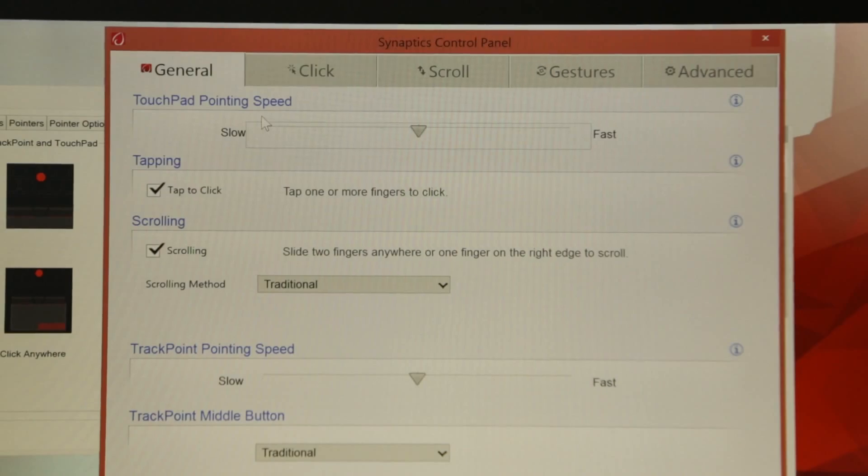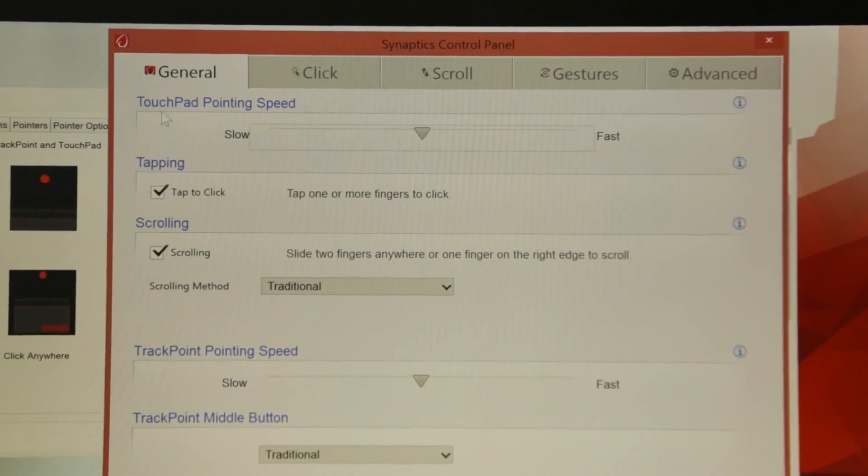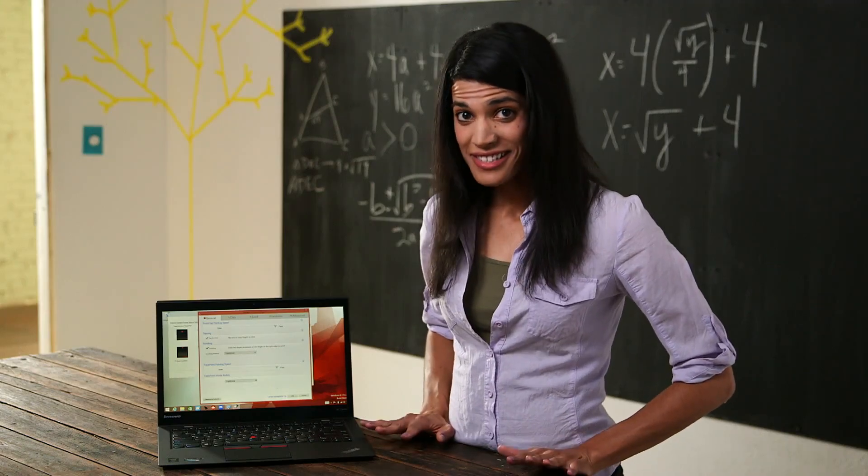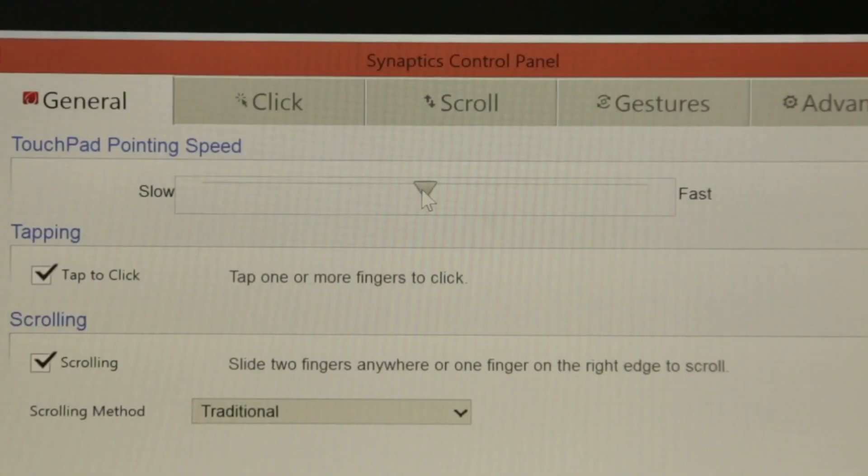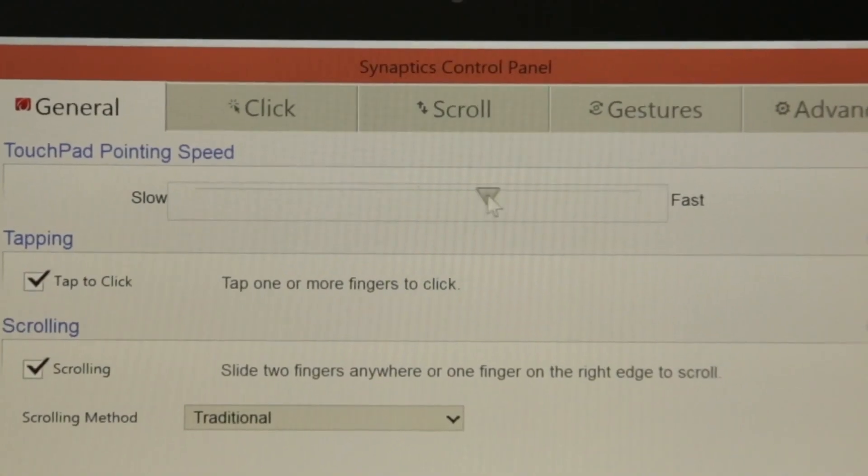At the top of this window is the touchpad settings. It's really a matter of personal preference, how fast you want your cursor to move. The good thing is it's a sliding scale. I'm going to shift this over to fast.